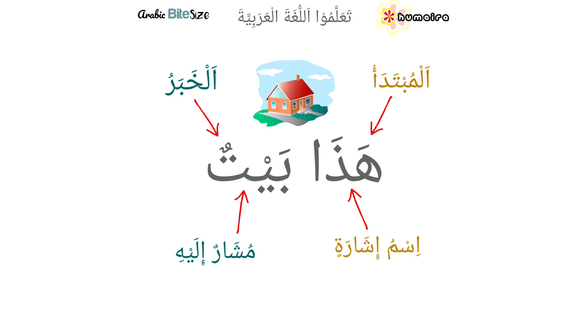...this sentence: هذا بيت. هذا بيت is a جملة اسمية — it is a nominal sentence, a sentence which starts with a noun.